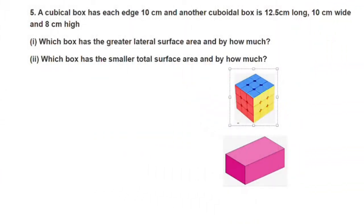Hello everyone, welcome to this video. We are going to do exercise 13.1 question number 5. Please don't forget to subscribe to our channel. The question is: a cubical box has each edge of 10 cm, and another cuboidal box is 12.5 cm long, 10 cm wide, and 8 cm high. Which box has the greater lateral surface area and by how much? Here we have two types of box.